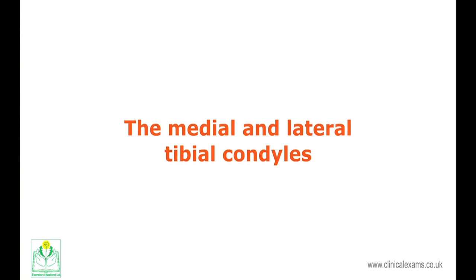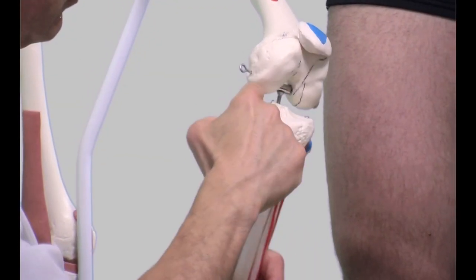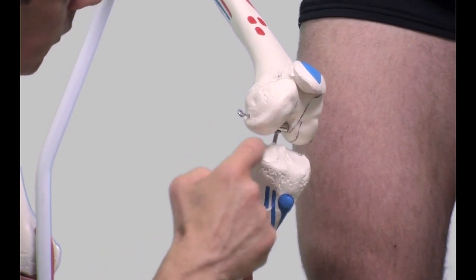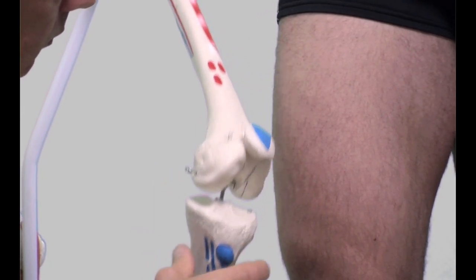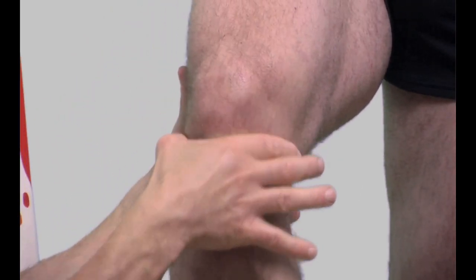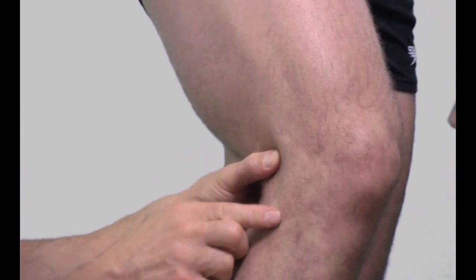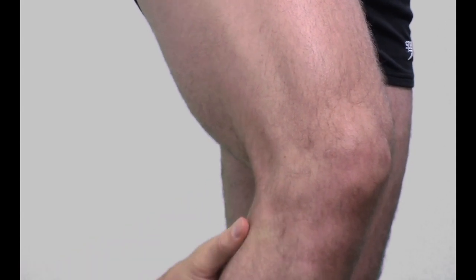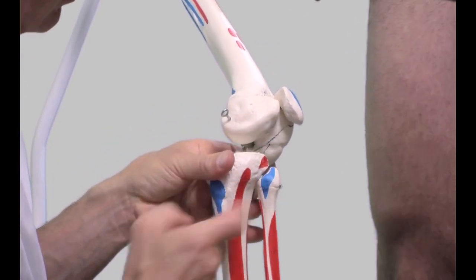The medial and lateral tibial condyles are just below the femoral condyles. Their superior surface is flat, forming the tibial plateau. The medial tibial condyle is slightly larger than the lateral. Apart from the posterior borders, the rest of the condyles are easily palpable. At the lateral tibial condyle, about 1 cm below the posterolateral perimeter, the rounded head of the fibula can be palpated with ease.